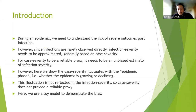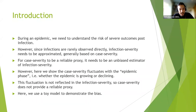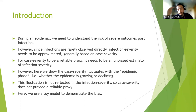During an epidemic, we want to understand the risk of severe outcomes post-infection. But infections themselves are rarely observed directly. Instead, we have to approximate infection severity, usually based on case severity — looking at the severity of observed infections or cases. For case severity to be a reliable proxy of infection severity, it needs to be an unbiased estimator. However, I'll show that case severity actually fluctuates with the epidemic phase — with the growth rate — and this fluctuation is not reflected in the true infection severity, which should be constant. Therefore, case severity isn't a particularly reliable proxy.